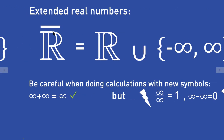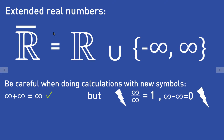But first of all, be careful when doing calculations with these two new symbols, plus infinity and minus infinity. Some things work out. For example, infinity plus infinity is still infinity, because if you sum two very large numbers — numbers that are larger than every other number — you still get a number that is larger than every other number.